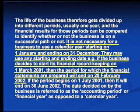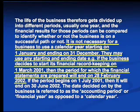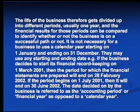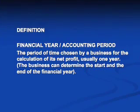It is not necessary for the business to use the calendar year from January to December. They may use any starting or ending date. If the business decides to start the financial record keeping on the 1st of March, then the financial year will end on the 28th of February. If the period begins on the 1st of July 2001, it will end on the 30th of June 2002. This decision by the business is referred to as the accounting period or the financial year, as opposed to the calendar year.